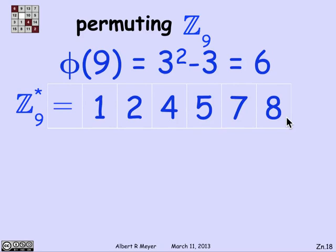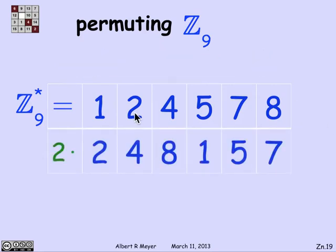What happens if I multiply them all by 2? 2 is in Z_n*. Multiplying them by 2: 2 times 1 is 2, 2 times 2 is 4, 2 times 4 is 8, 2 times 5 is 1 because it's 10 with a remainder of 1, 2 times 7 is 14 which translates into 5, 2 times 8 is 16 mod 9 which translates into 7. And as claimed, here's 2, 4, 8, 1, 5, 7. It's the same numbers as 1, 2, 4, 5, 7, 8, just in a different order.